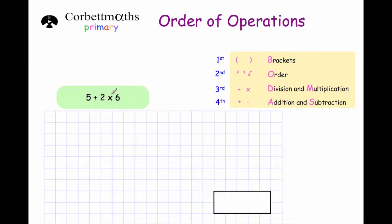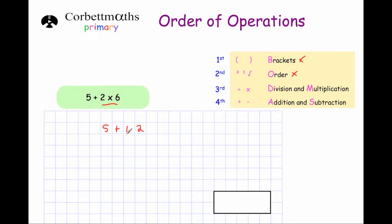Our first question is 5 plus 2 times 6. There are no brackets in this calculation and no squares or cubes. Next we look at divisions or multiplications — there is a multiplication, so we're going to do that multiplication first. 2 times 6 is 12, so we write down 5 plus 12, keeping the sum in the same order. Then we do the addition: 5 plus 12 is equal to 17. That's our answer, 17.